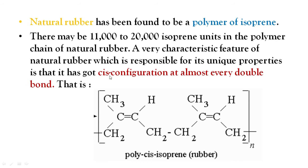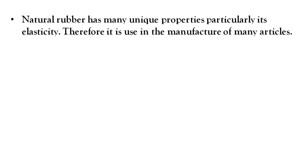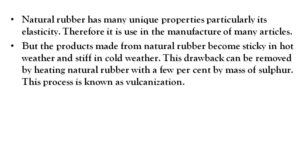This is called cis-isoprene. Natural rubber has unique properties, particularly its elasticity, and therefore it is used in the manufacture of many articles. However, products made from natural rubber become sticky in hot weather and become stiff when cold.